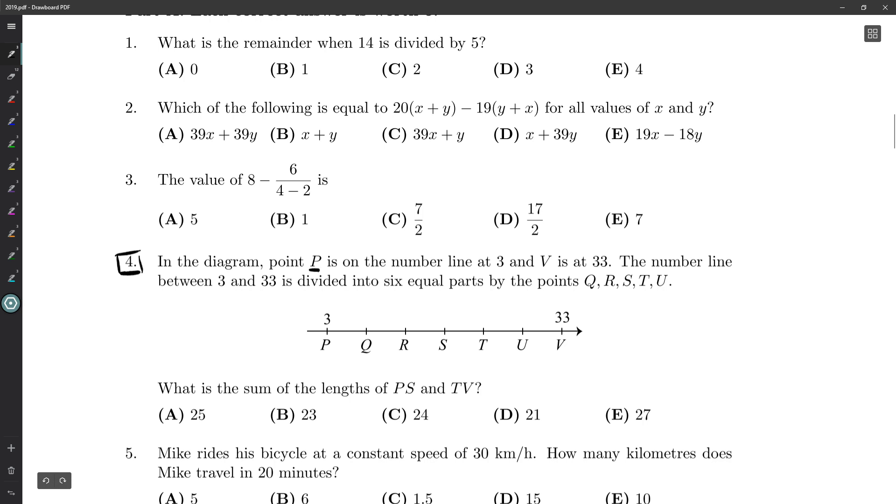In the diagram, point P is on the number line at 3, and V is at 33. The number line is then divided into six equal parts by the points P, R, Q, P, no, we already have P, Q, R, S, T, U. Sometimes reading is hard.